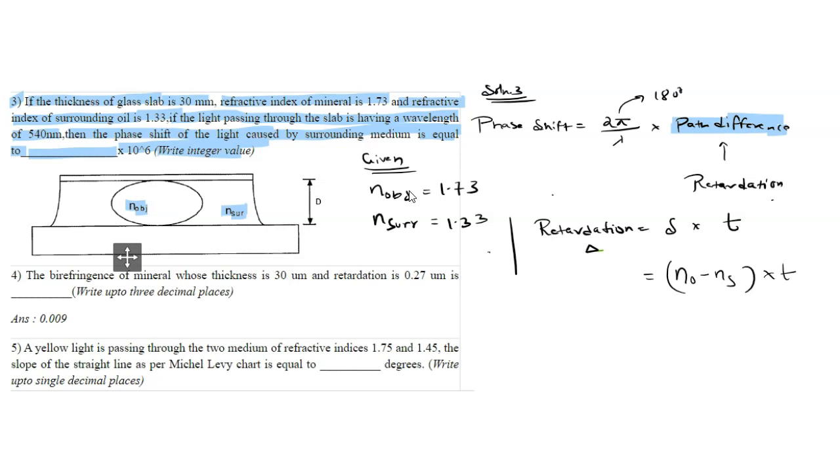So delta can be calculated as (1.73 minus 1.33) into thickness, which is 30 millimeters. If we solve this, it comes out to be 12 millimeter.